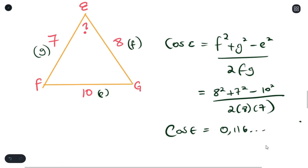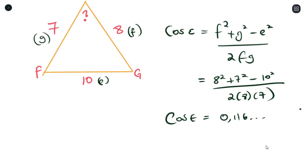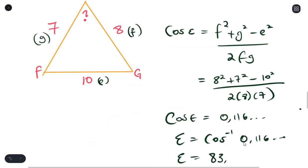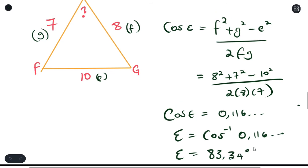So you get cos E is 0.116 and so on. So to actually get E, we'll put the second function of cosine. And that will give you 83.34 degrees. And that will be your answer.